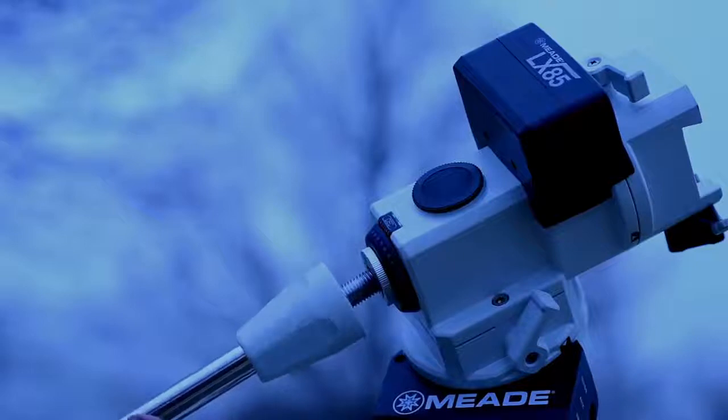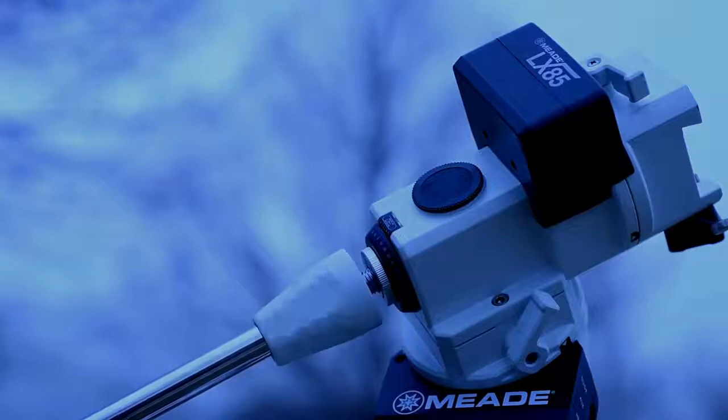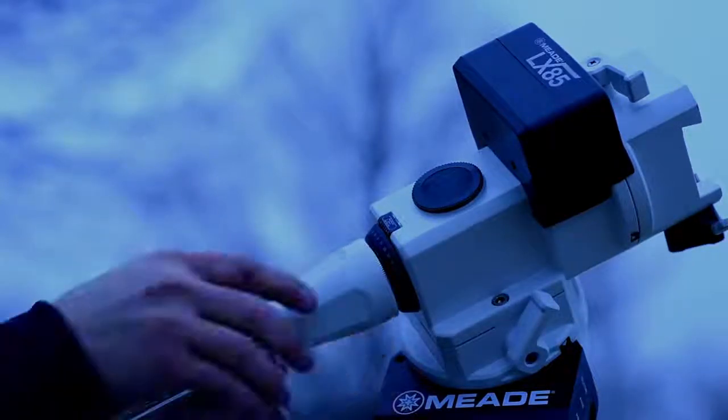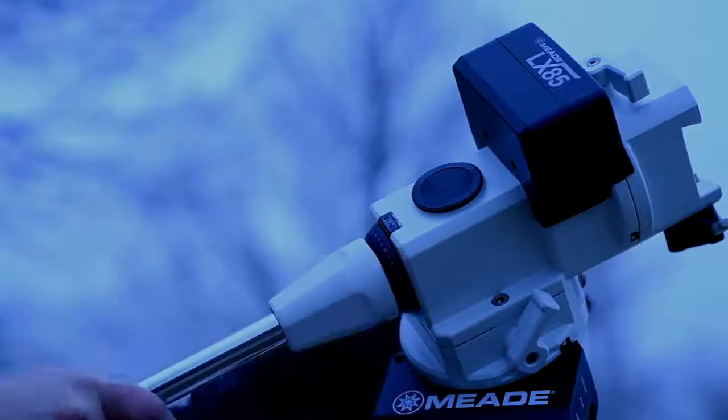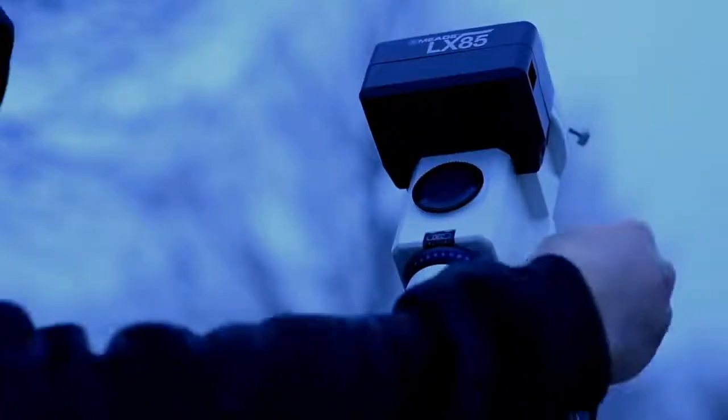Thread the locking nut onto the top of the counterweight shaft until it stops. Now thread the counterweight shaft into the mount until it stops. Tighten the locking nut against the mount so the counterweight shaft is firmly held into position.